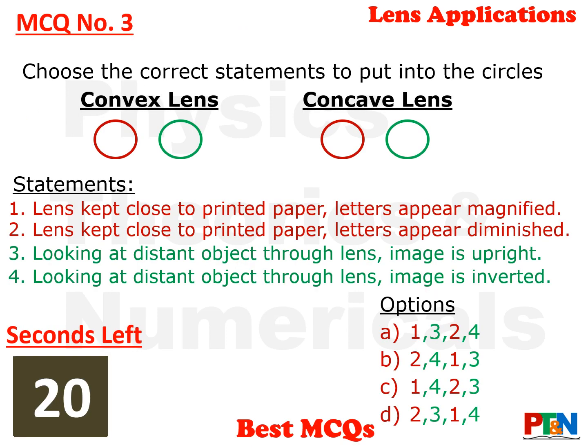Next MCQ: you need to fill up the circles from the statements given. The statements are regarding image formation by convex lens and concave lens. First statement: lens kept close to printed matter — letters magnified. Second statement: lens kept close to printed matter — letters diminished. Third statement: looking at a distant object — the image is upright. Fourth statement: looking at a distant object — the image is inverted. You need to choose the statements for convex lens and concave lens. You have 20 seconds.